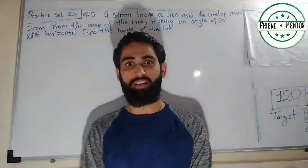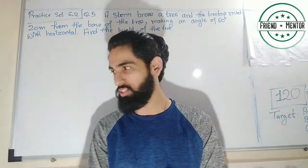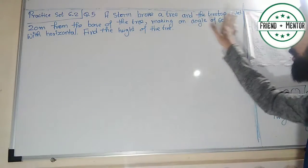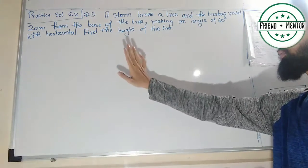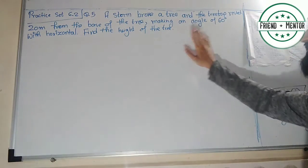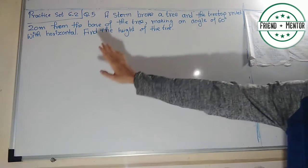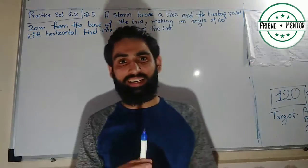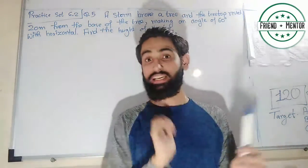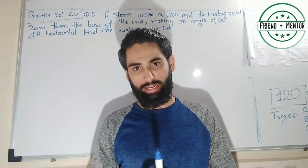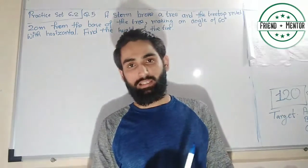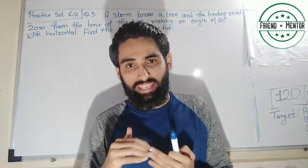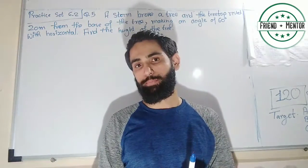Question number 5 is very interesting. A storm broke the tree and the top of the tree rested 20 meters from the base of the tree, making an angle of 60 degrees with the horizontal. Find the height of the tree. So a tree fell due to a storm — when it fell, the top touched the ground at 60 degrees.